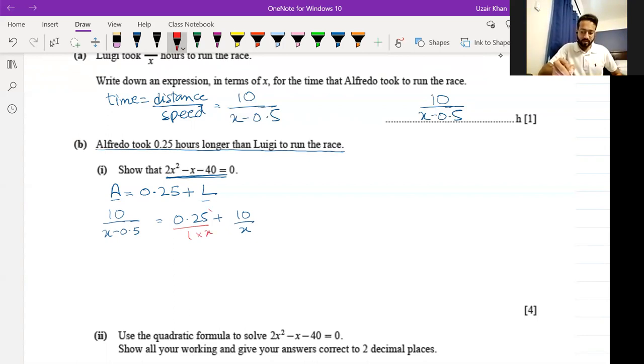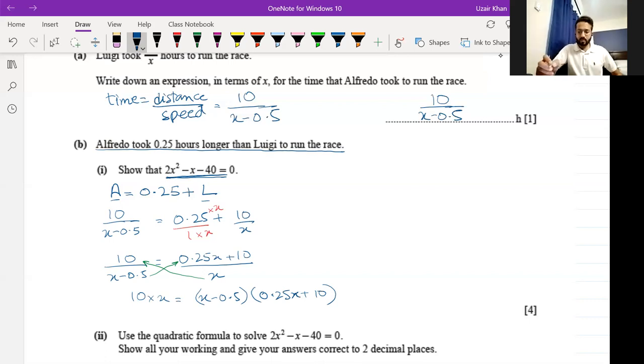The LCM will be x, so 0.25 will get multiplied by x. This becomes 0.25x plus 10, the whole thing upon x. The next step is to cross multiply the denominators. That results in 10 times x equals x minus 0.5 multiplied by 0.25x plus 10. You can convert these decimals into fractions if dealing with decimals tends to get overwhelming. That is also allowed. I'm continuing with fractions this time.